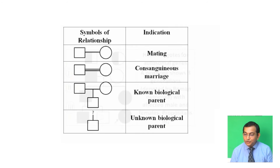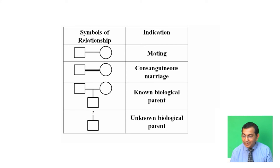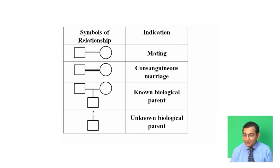There are also symbols for relationships. In the case of mating, a male and female are connected by a horizontal line. For a consanguineous marriage, two horizontal lines connect the male and female.